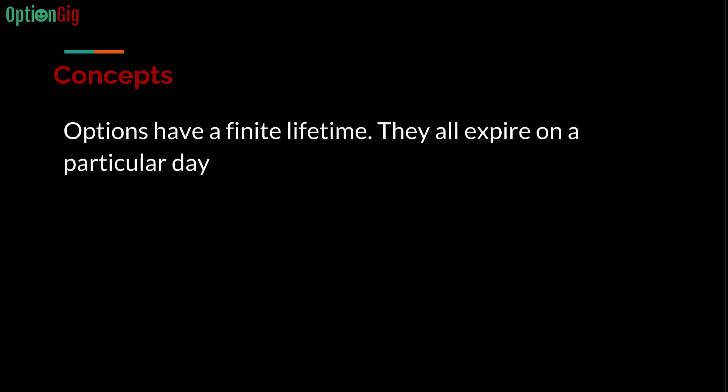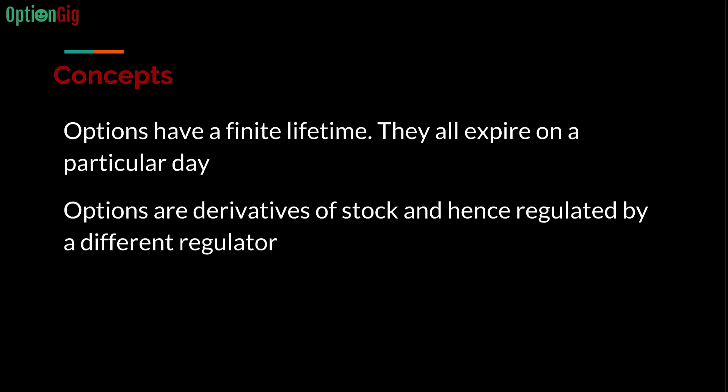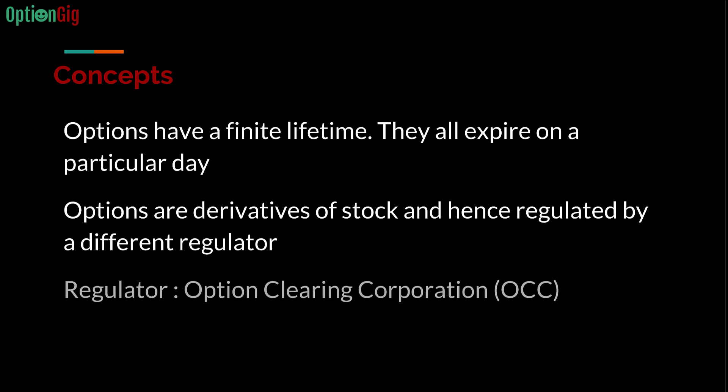Let's refresh some basic concepts. First, options have a finite lifetime — all options will expire on a particular day. We trade mostly options that expire around 45 to 50 days. Options are derivatives of stock and are not regulated by the SEC but by a different regulator called the Option Clearing Corporation. We'll see what role the OCC plays in the overall assignment process.